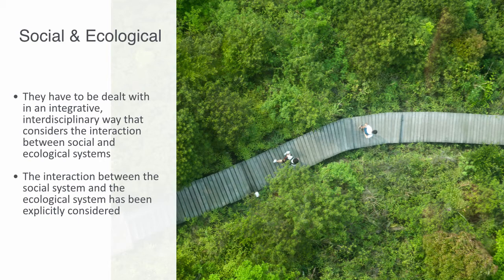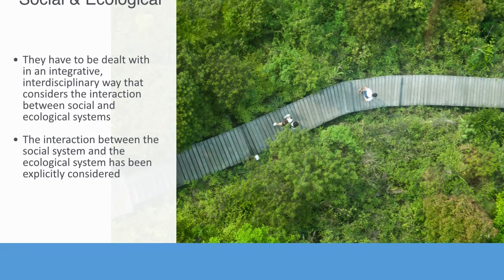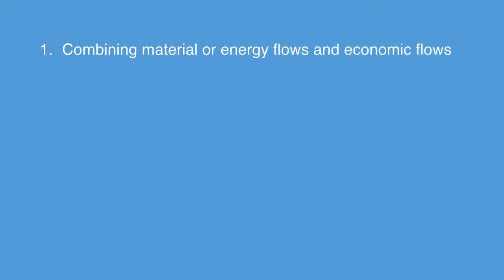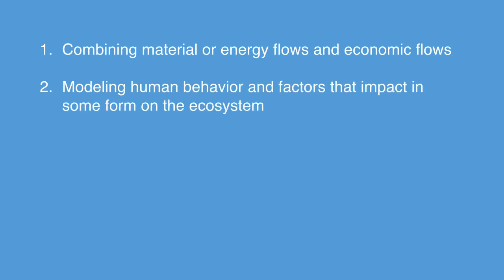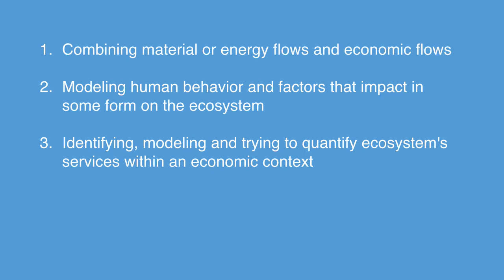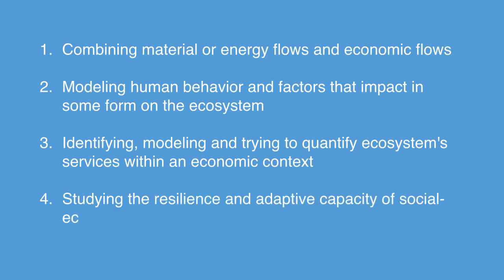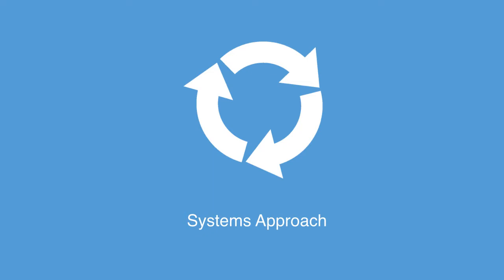Various research approaches have been developed and applied to different studies in which the interaction between the social system and the ecological system have been explicitly considered. These approaches include combining material or energy flows and economic flows, modeling human behavior and drivers that specifically impact on some aspect of the ecosystem, identifying and trying to quantify specific ecosystem services within an economic context, or studying the resilience and adaptive management of socio-ecological systems. Almost all of these different approaches take systems theory as their theoretical underpinning.